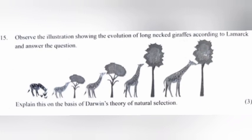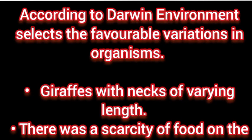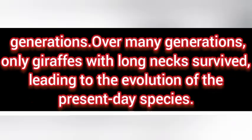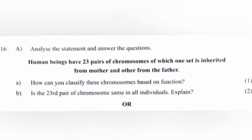Question 15: Observe the illustration showing the evolution of long-necked giraffes according to Lamarck and answer. Explain this on the basis of Darwin's theory of natural selection. Answer: According to Darwin, the environment selects favorable variations in organisms. Among giraffes with necks of varying length, there was a scarcity of food on the ground. Giraffes with longer necks could reach leaves on tall trees and thus survived better. Only giraffes with longer necks survived in the competition for food. The favorable variation was passed on to the next generations. Over many generations, only giraffes with long necks survived, leading to the evolution of the present-day species.